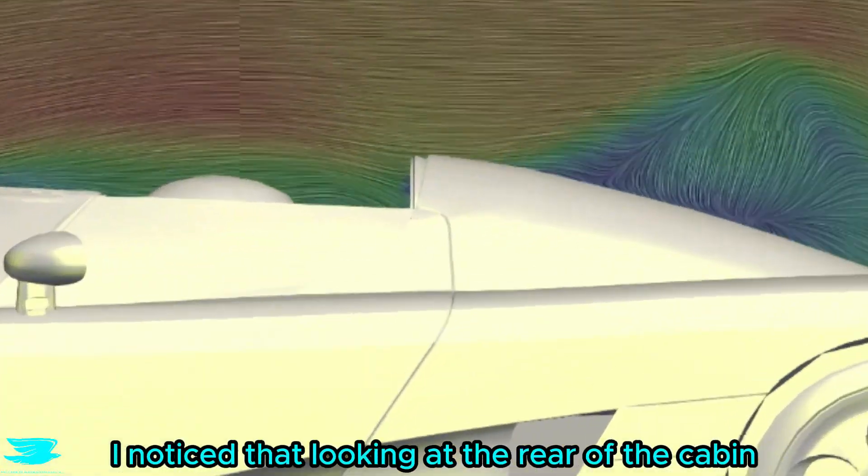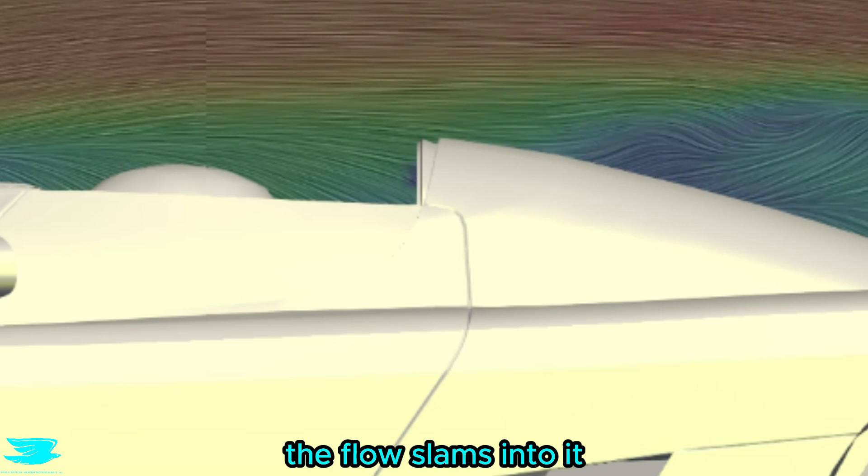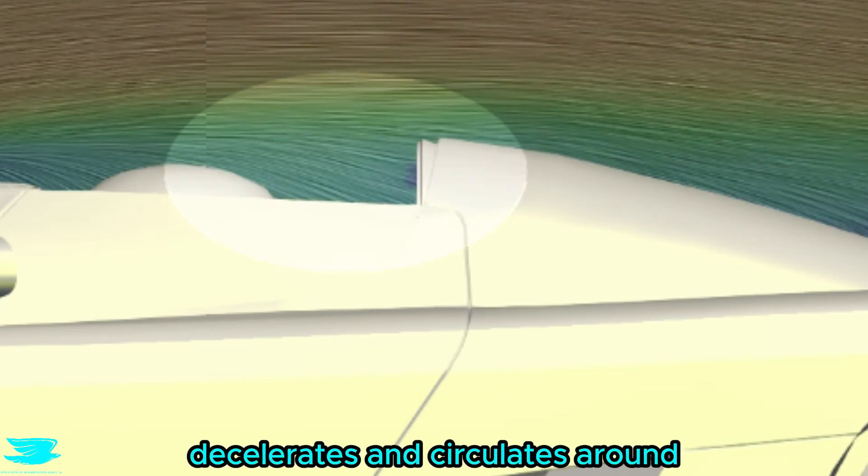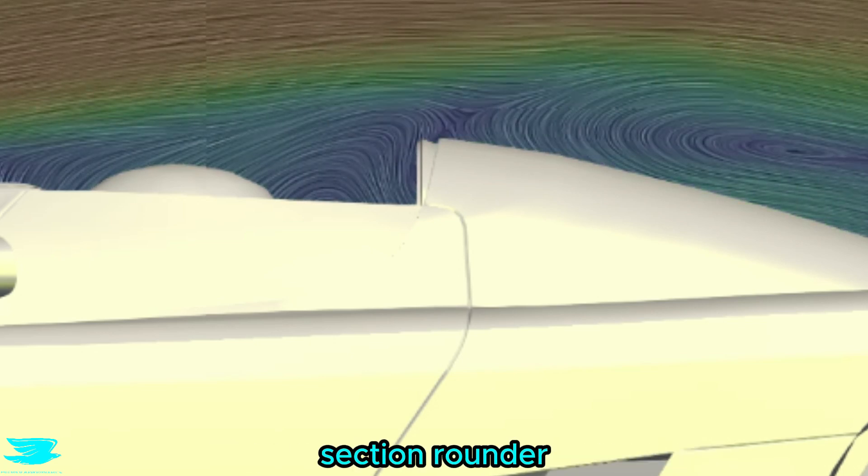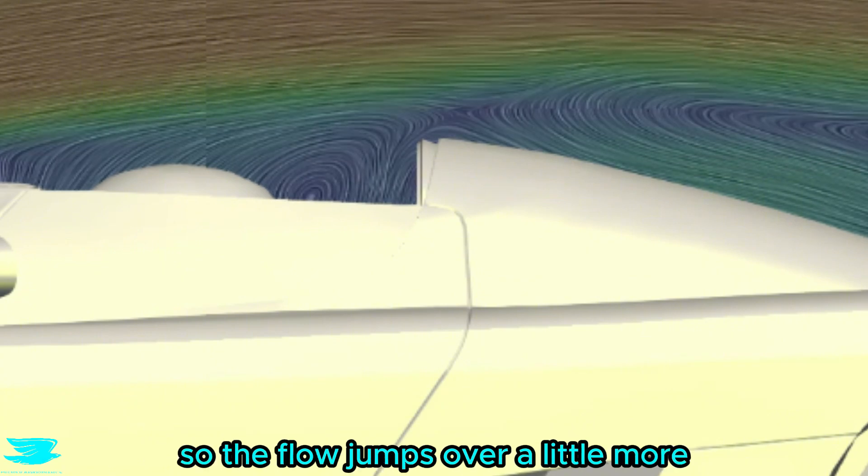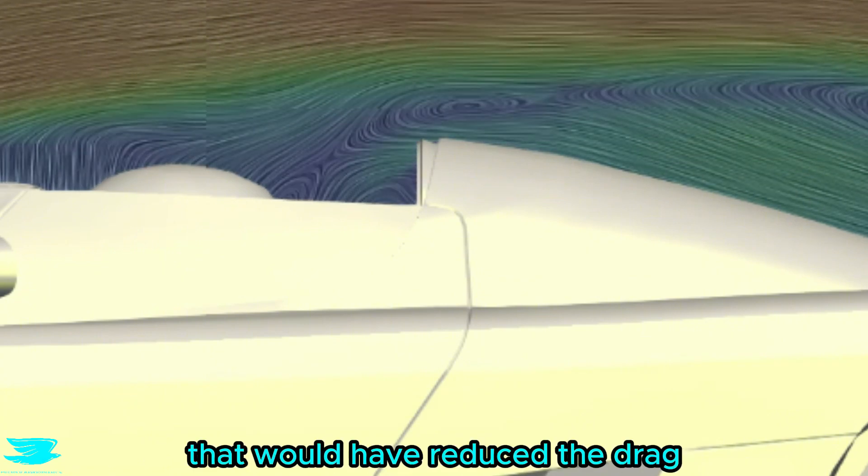And just quickly I noticed that looking at the rear of the cabin, the flow slams into it, decelerates, and circulates around. That isn't good. If Koenigsegg was willing to compromise on the CCX's looks, they could have made the rear section rounder or brought it down more so the flow jumps over it a little more. That would have reduced the drag.